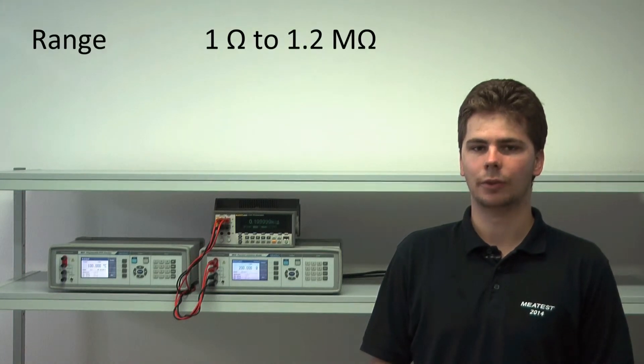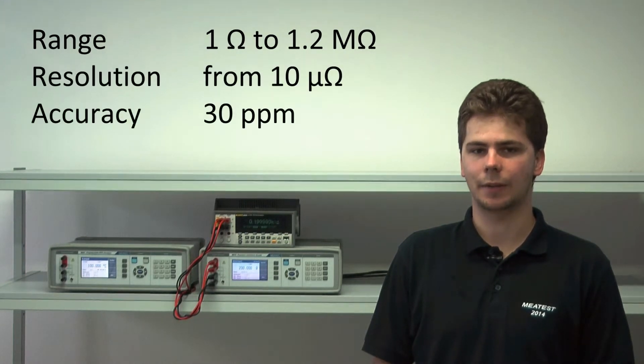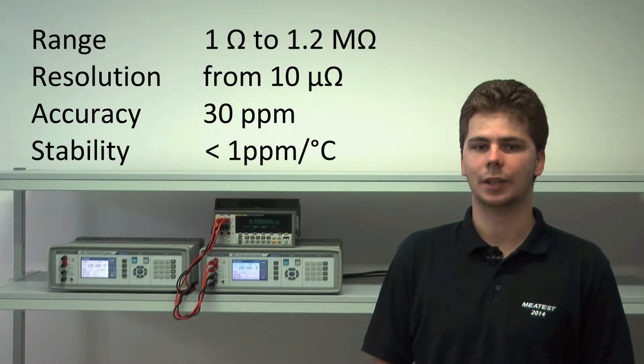The M632 programmable decade operates in continuous range from 1 ohm to 1200 kilo ohms with low range resolution as high as 10 micro ohms, accuracy from 30 ppm and temperature stability of less than 1 ppm per degree C.